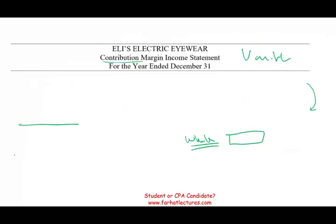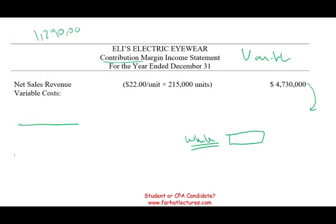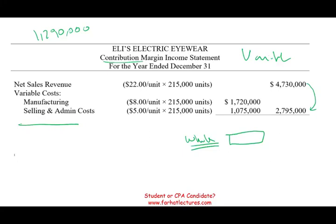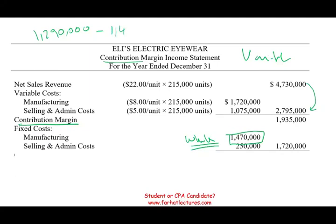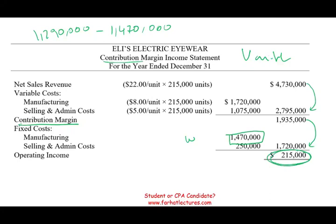Under absorption costing, we only expensed $1,290,000 of fixed manufacturing overhead. Under variable costing, we expense the full $1,470,000 — that's the difference. After also deducting fixed selling and administrative of $250,000, contribution margin minus all fixed costs gives us an operating income of $215,000 under variable costing. As expected, $215,000 is lower than the $395,000 operating income under absorption costing.